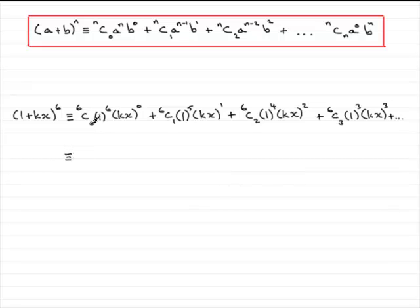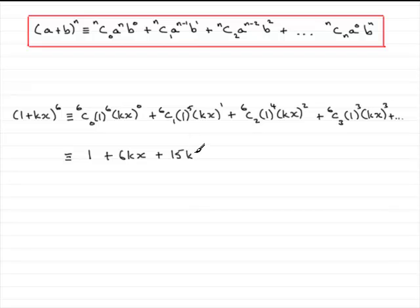Now just simply work out all these terms. 6C0 on the calculator is 1; 1 to the power 6 is 1; anything to the power 0 is 1, so the first term is simply 1. For the next term, 6C1 is 6; 1 to the 5 is 1, so you've got 6 times kx — that's plus 6kx. For the next term, 6C2 is 15; you've got 1 here and kx all squared — so that's 15k squared x squared. This next term: 6C3 turns out to be 20, so you've got plus 20, times 1 cubed which is 1, and k cubed x cubed — so 20k cubed x cubed. Don't forget to write plus and so on.